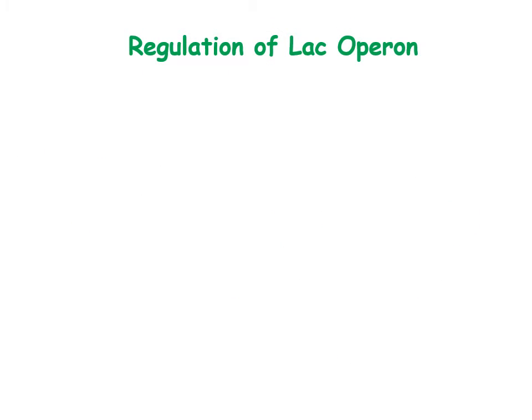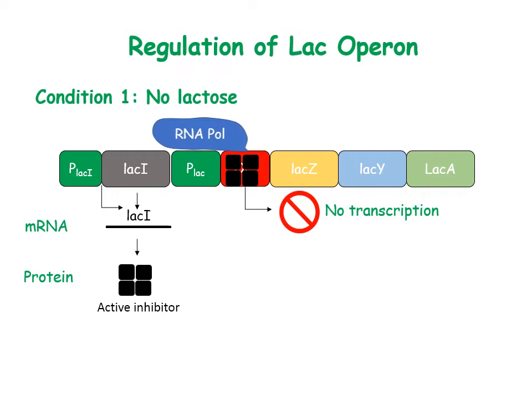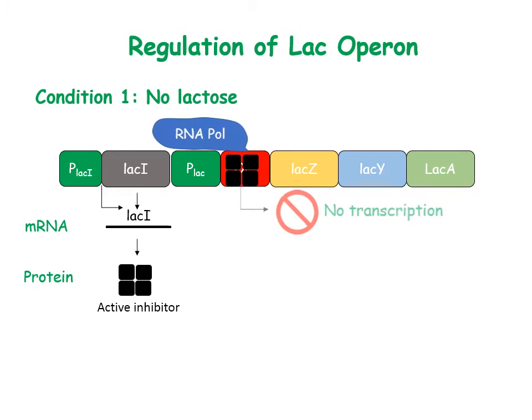Expression of LAC operon genes is regulated by the lactose and glucose status of the cell. Condition 1: When lactose is absent, the LAC repressor, which is constitutively expressed, binds to the LAC operator, preventing RNA polymerase from transcribing the LAC genes.